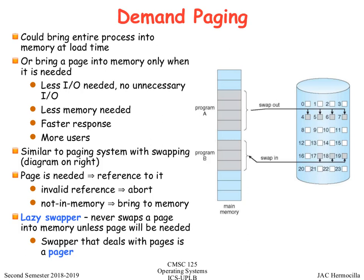The idea of demand paging is you only bring into memory the module that you need. A process like Firefox or a PDF viewer will be allocated pages, but not all needed pages are allocated right away. The advantages of this are: less I/O is needed, less memory is needed, more memory is available for other processes increasing the degree of multiprogramming, faster response, and more users supported.